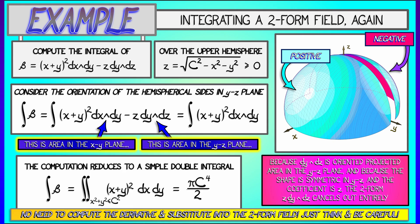Now, think about it. Because we understood what these two forms were in terms of oriented projected area, because we were clever in terms of thinking about the orientation and what cancels with what, we could do this problem without any parametrization at all.